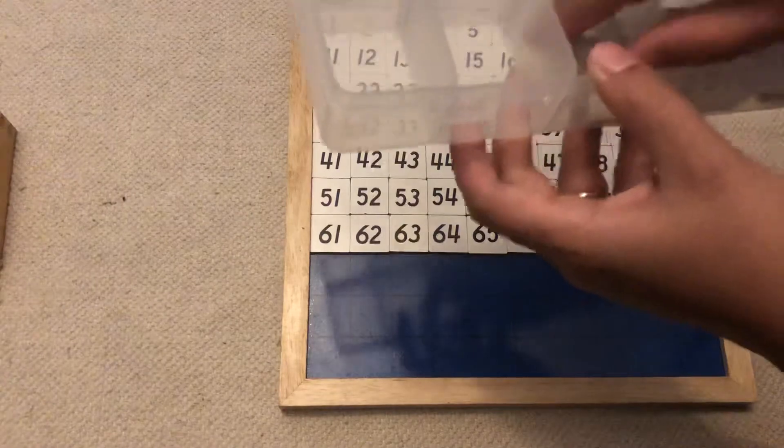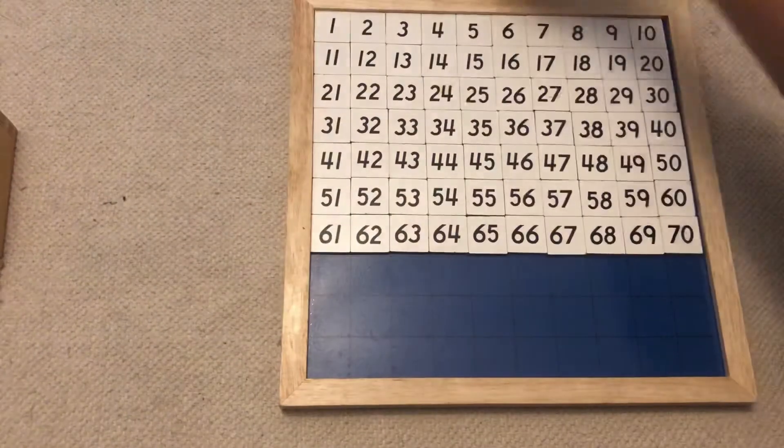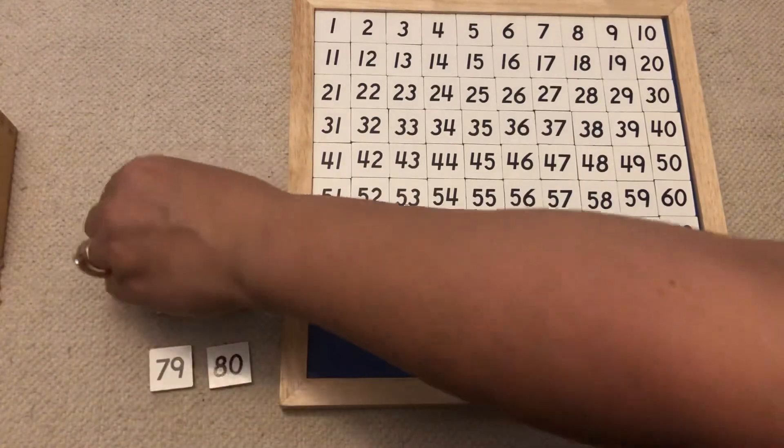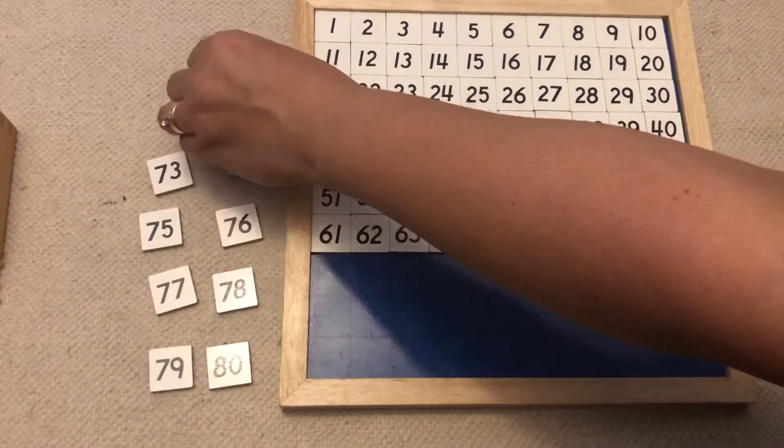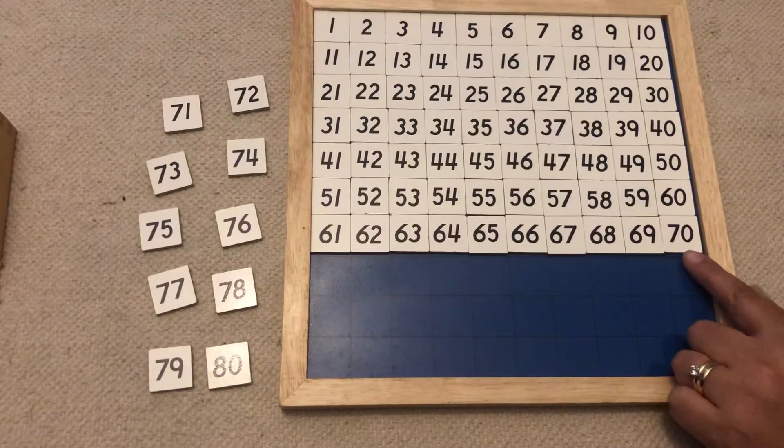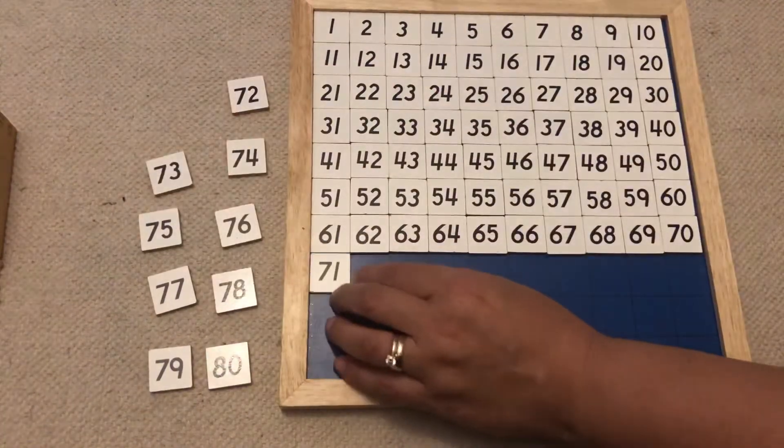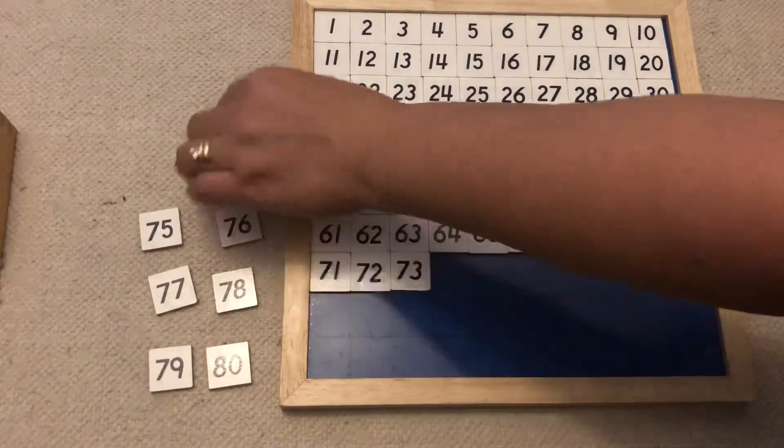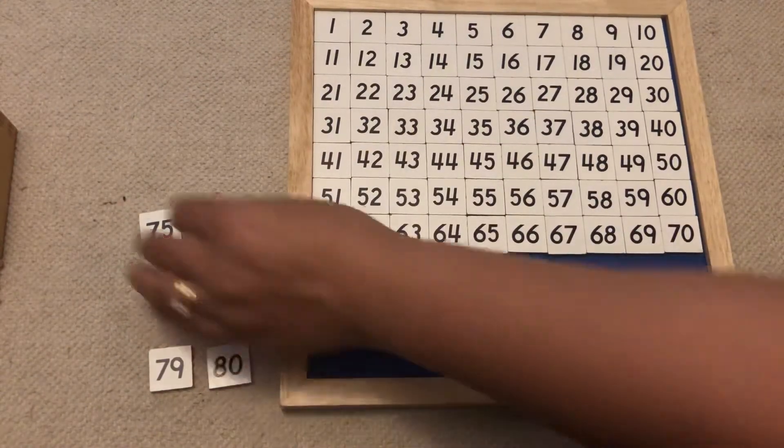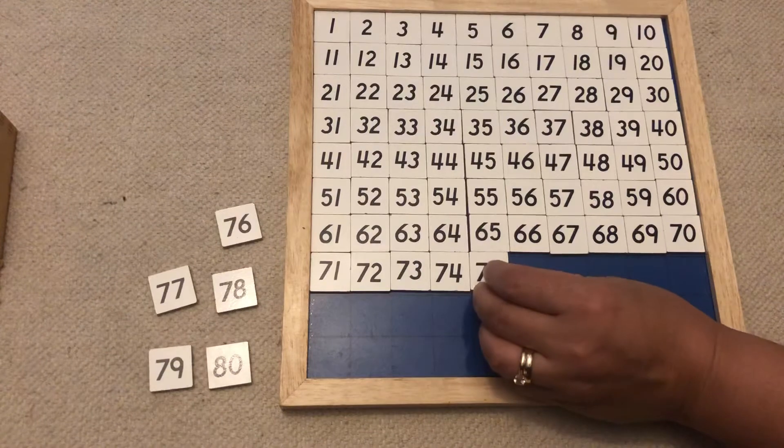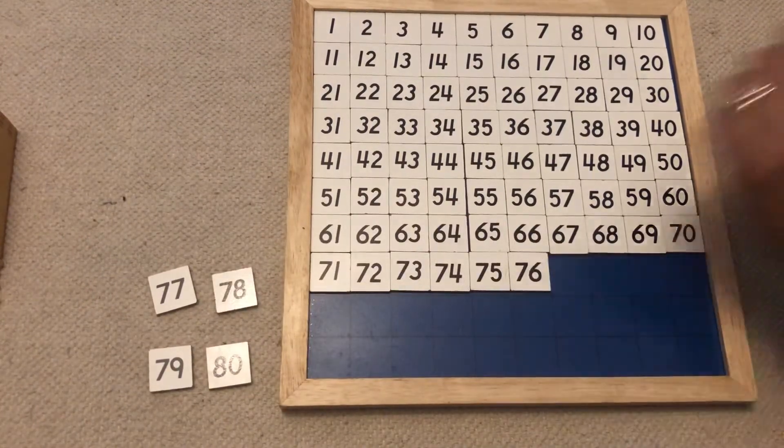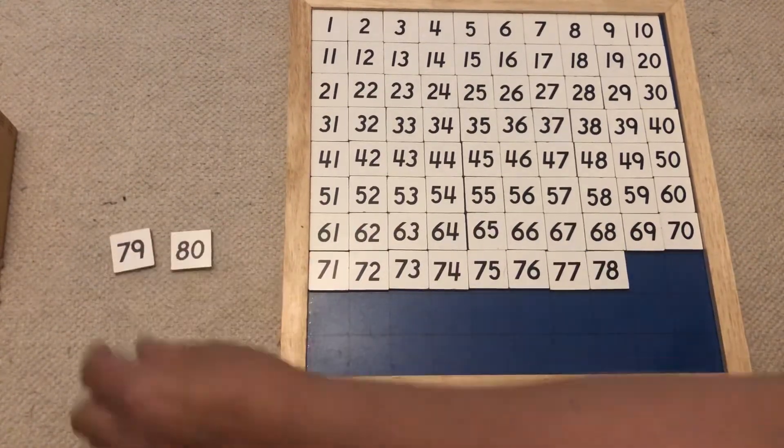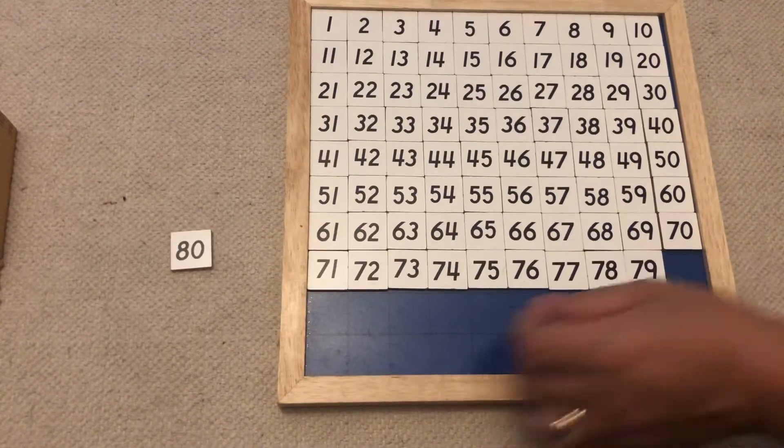Next row. After 70 comes 71, 72, 73, 74, 75, 76, 77, 78, 79, 80.